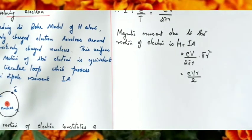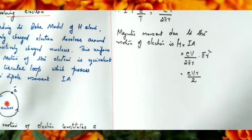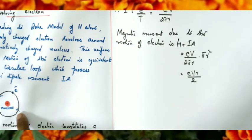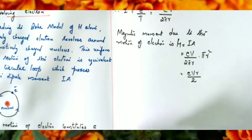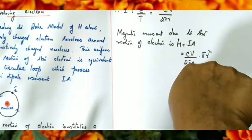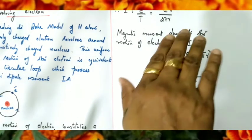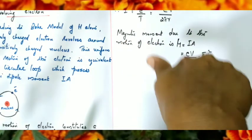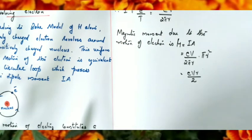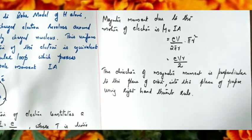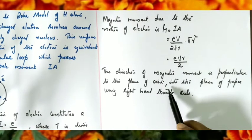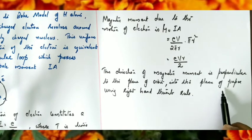Regarding direction: the electron moves in the anti-clockwise direction, so the conventional current is in the clockwise direction. Using the right hand thumb rule, the magnetic moment is directed into the plane of the orbit, i.e., into the plane of the paper.